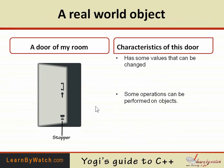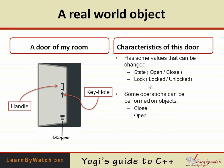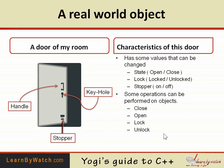The third example is the door of my room. My door has a handle — by using it I can close and open the door, so we are changing its state (open or close), and the operations are 'close' and 'open'. My door also has a keyhole; by using it I can lock or unlock the door, so the value of lock can be changed and the operations are 'lock' or 'unlock'. The third thing — my door has a stopper whose value can be either on or off, and I can perform 'stopper on' or 'stopper off' operations on this object.